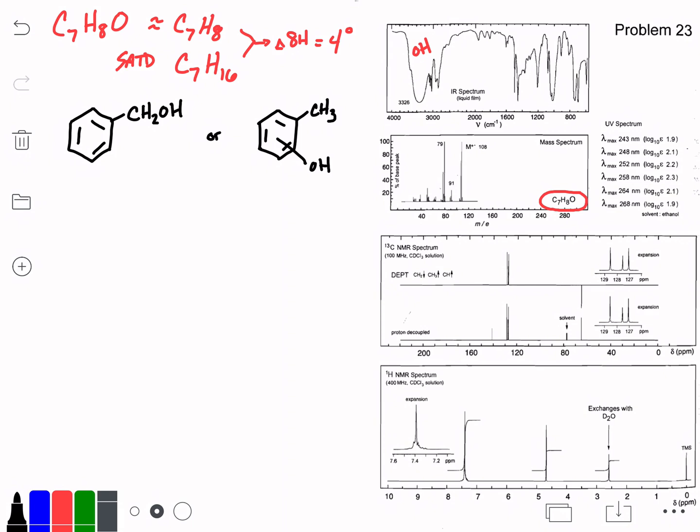Before we get into that, we can look at some additional information here. When we look at the proton NMR at the very bottom of the screen, we see this note that one of the protons exchanges with D2O. This is a classic example of an OH group - whether we're talking about an alcohol or a carboxylic acid that contains an OH, those protons can exchange with deuterated solvent. So that's our clue here that we do in fact have an OH.